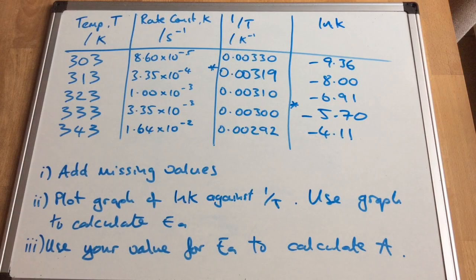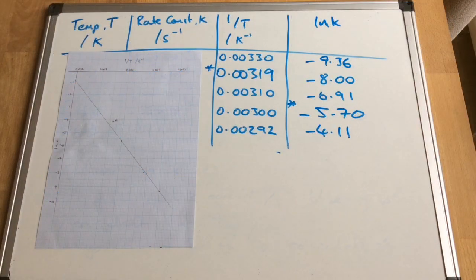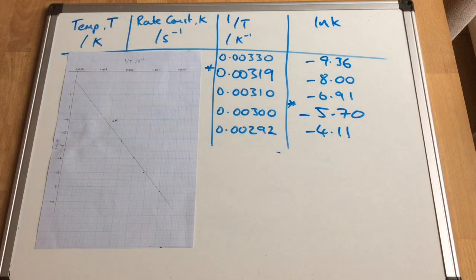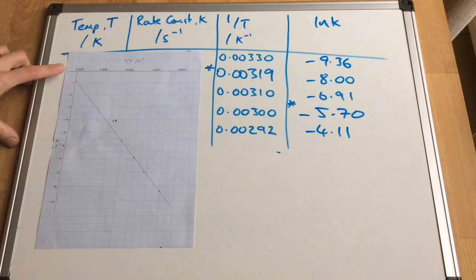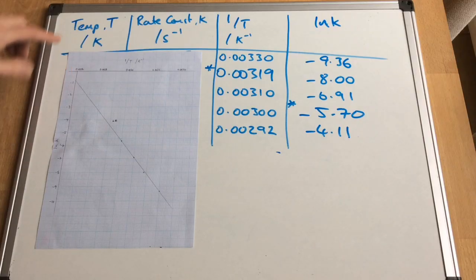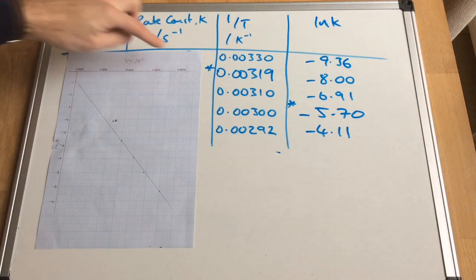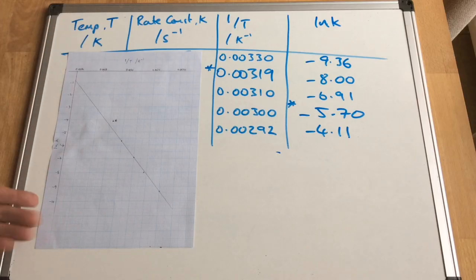So there's your two missing values, 0.00319 and minus 5.70. So there's my graph. I've chosen a scale to make sure that I'm covering at least half of the graph paper, you can see I've virtually covered the entire sheet of graph paper there. So on my x-axis, I'm starting at 0.0026, and I'm going up to 0.0034.